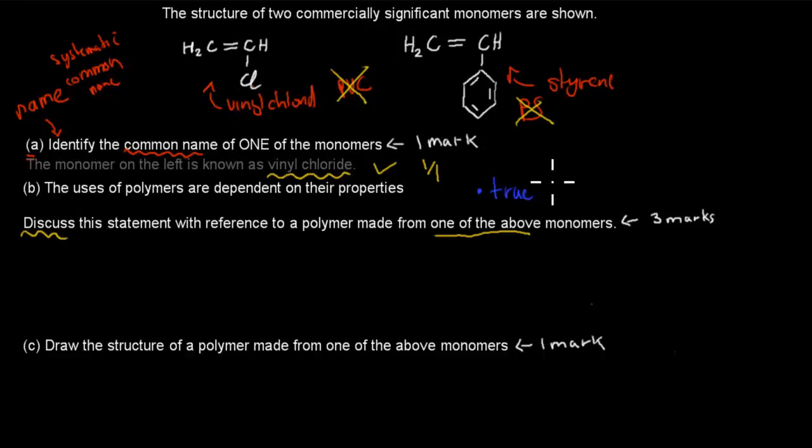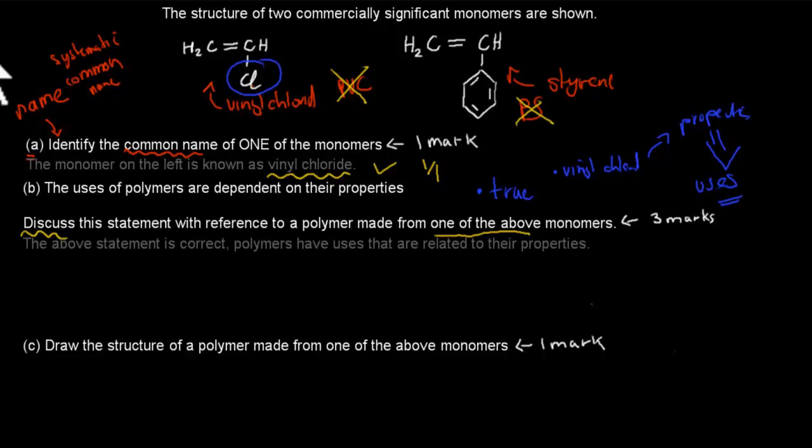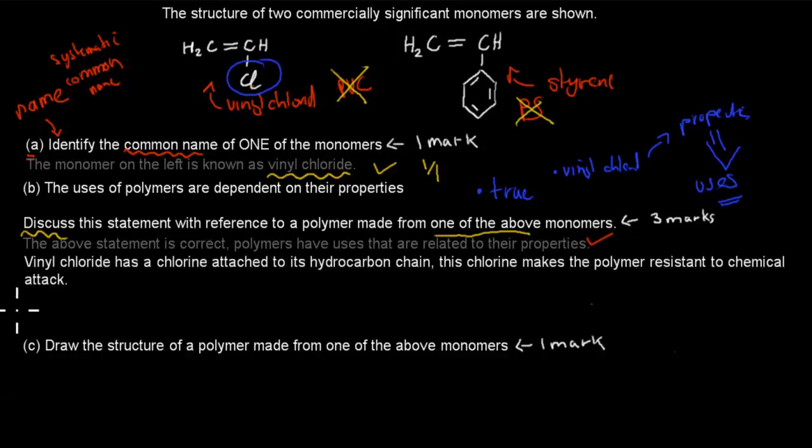Then I chose the monomer, which was, we'll talk about vinyl chloride in this one. I talked about some of the properties it has, such as the fact that it's chemical resistant because of that chlorine group. And then I talked about the actual uses and how the uses are related to properties. And that gives me my three marks. So I'll start the first statement. The above statement is correct. Polymers have uses that are related to their properties. Good. The second part I wrote is, vinyl chloride has a chlorine attached to its hydrocarbon chain. And the hydrocarbon chain is just the rest of its body. This chlorine makes the polymer resistant to chemical attack. This was its property, chemical resistance.